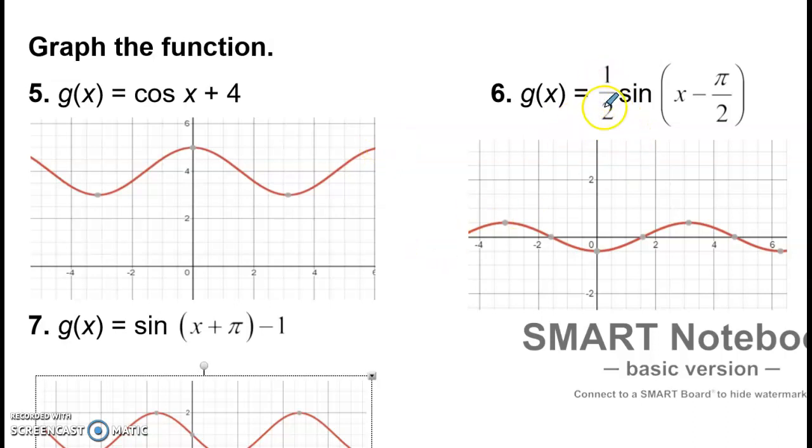Number 6 over here, half sine of x minus π halves. So the half in front tells the amplitude. So instead of going all the way up to 1, now its height is only 1 half above and below the midline. And then it has this minus π halves. So the sine function, the beginning of it would typically be right here. But it's being shifted to the right π halves. And π divided by 2 is like 1 point something. So this point right here has now been shifted over to that point right there.